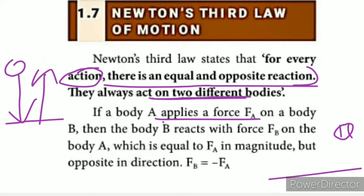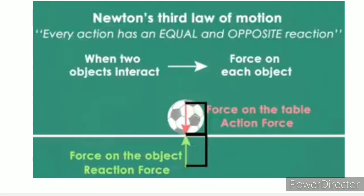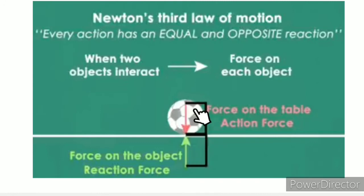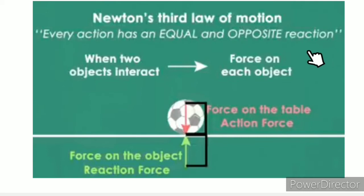F_B is equal in magnitude but opposite in direction to F_A, so F_B = -F_A. For example, a ball rests on a table — the ball exerts a force on the table, and the table exerts an equal reaction force back on the ball. The action and reaction are equal and opposite in direction, acting on two different bodies: the ball and the table.